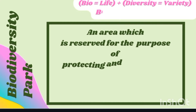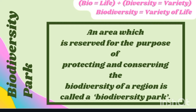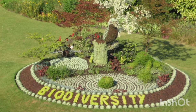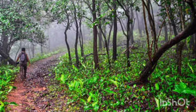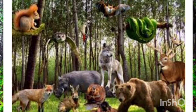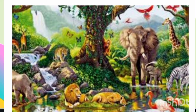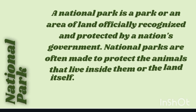An area reserved for the purpose of protecting and conserving the biodiversity of a region is called a biodiversity park. 'Bio' means life and 'diversity' means variety, so biodiversity means variety of life. A biodiversity park is a place where different types of animals, insects, birds, plants, and trees all exist together and are conserved and protected by the government.